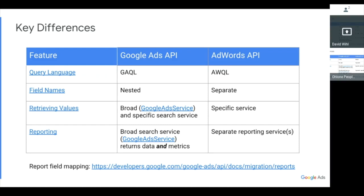Some of the key differences: the query languages are very different. The field names are different — in the AdWords API they were separate, but here field names are nested, like 'ad group dot whatever.' For retrieving values, there are a bunch of different services in the AdWords API, but here there's really the Google Ads Service, which is the best way to retrieve values. While there are APIs for each individual resource and you can do a GET, a GET is limited in performance. You really want to use the Ads Service and make regular queries, either service by service or broader requests.